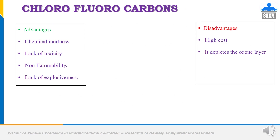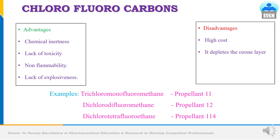Examples of propellants include chlorofluorocarbons, which have certain advantages: chemical inertness, lack of toxicity, no inflammability, and lack of explosiveness. However, they have disadvantages such as high cost and ozone layer depletion. Examples of chlorofluorocarbons are trichloromonofluoromethane, also called propellant 11; dichlorodifluoromethane, called propellant 12; and dichlorotetrafluoroethane, called propellant 114.